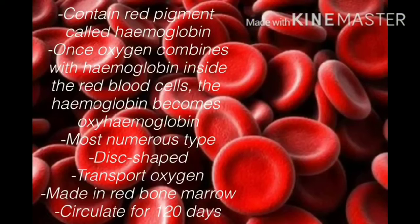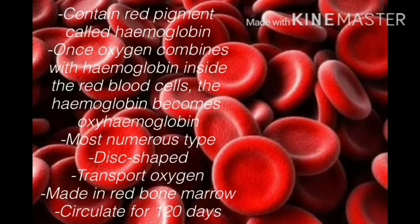Most of the cells in the blood are red blood cells. They contain a red pigment called hemoglobin. When oxygen combines with the hemoglobin inside the red blood cells, it becomes oxyhemoglobin. Red blood cells are the most numerous type, transport oxygen, are disc-shaped, and are made in red bone marrow.